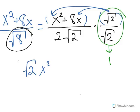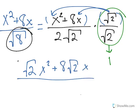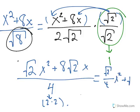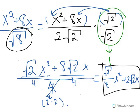We need to distribute, so using the distributive property we get square root of 2 times x squared plus 8 times square root of 2 times x, all over 4, because 2 times 2 is 4. To simplify further, we can rewrite this as square root of 2 over 4 times x squared plus 2 times square root of 2 times x, since we divide both terms by 4 and clear the denominator. And that's our answer.